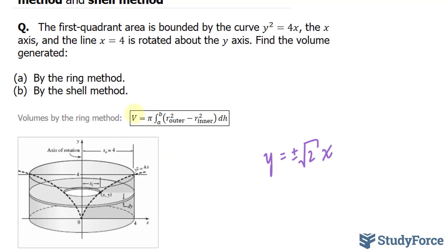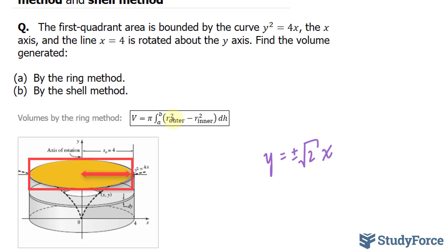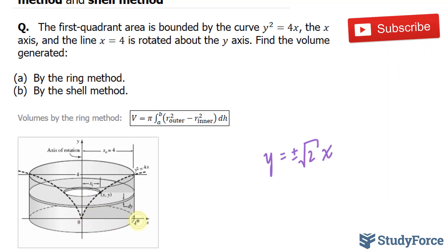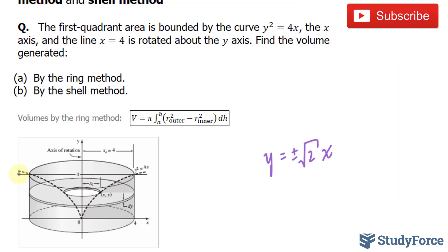What we have to do is follow this formula, where volume equals pi times the integral from bounds a to b of the outer radius R squared minus the inner radius r squared, dh. Looking at this illustration, we need to find the radius of the outer ring and subtract the radius of the inner ring. This is the inner radius, and this is the outer radius.